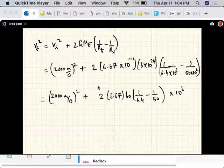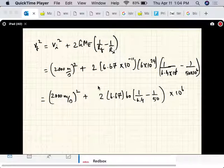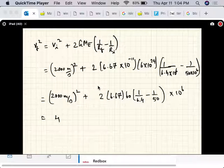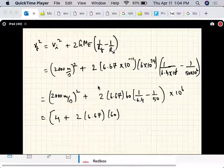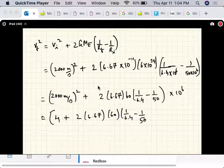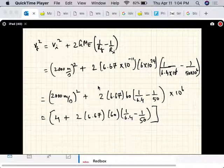What we'll do is spend one of that here, so it's 2 times 6.67 times 60 times (1/6.4 - 1/50) times 10 to the 6. The reason I wrote that 10 to the 6 is because you have a 10 to the 6 here. And two squared is four, so four plus 2 times 6.67 times 60 divided by 1.64 minus 1 over 50, times 10 to the 6 meters squared per second squared, because we've kept everything in SI units.